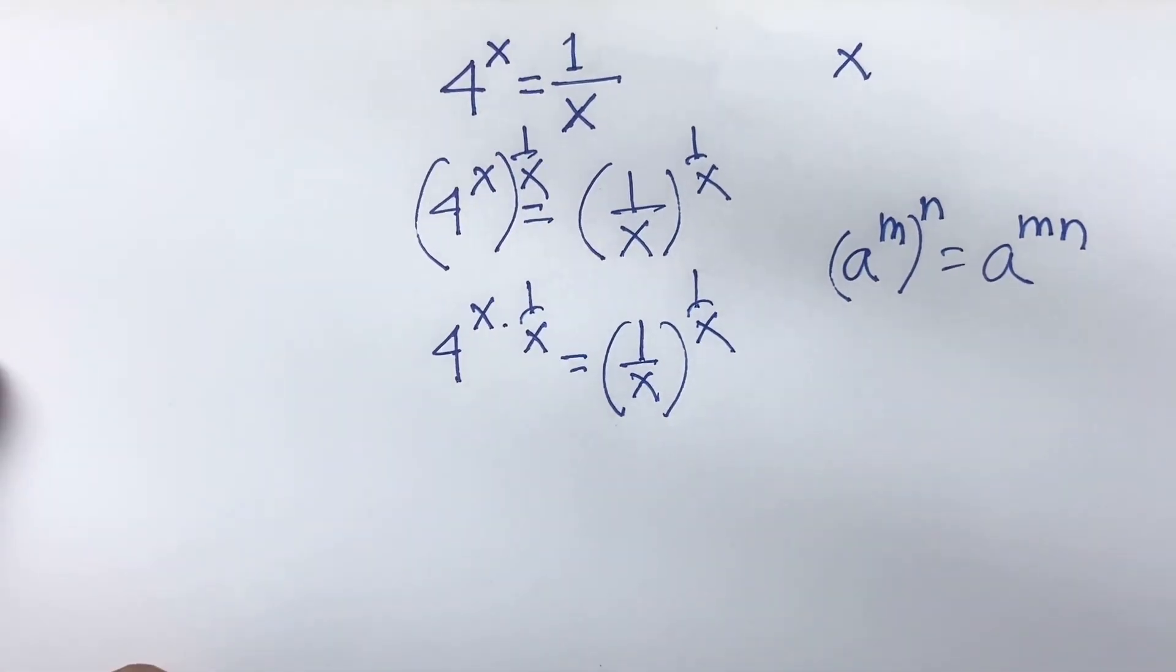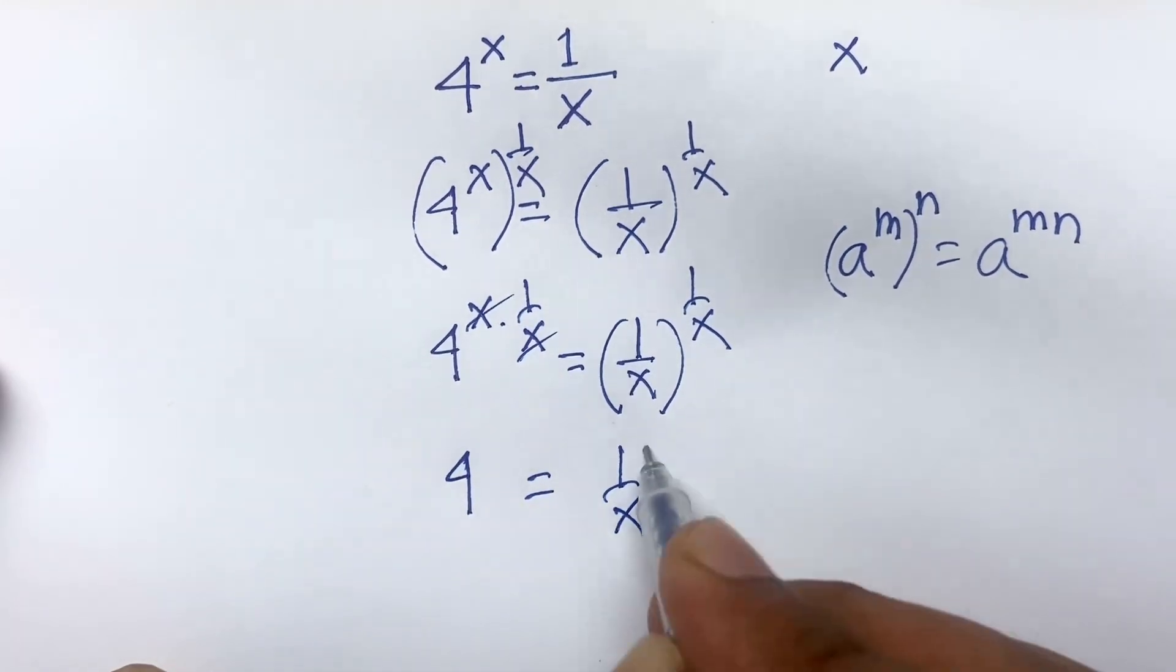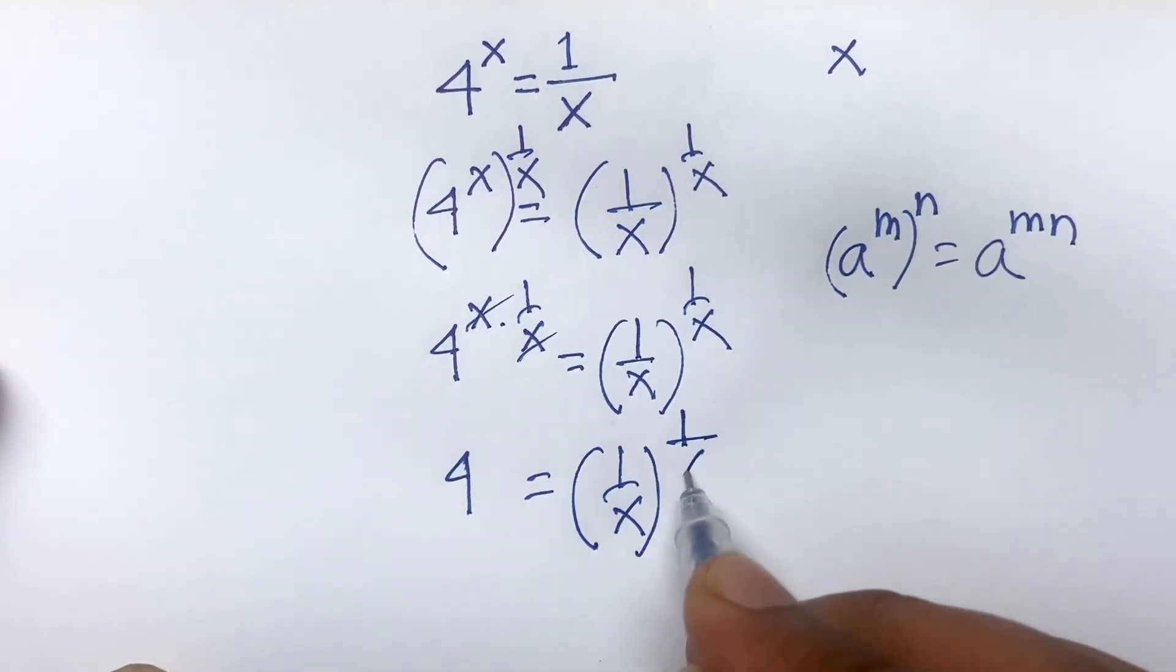Now, here is x times x cancel. So, we find out 4 is equal to 1 over x bracket power is 1 over x.